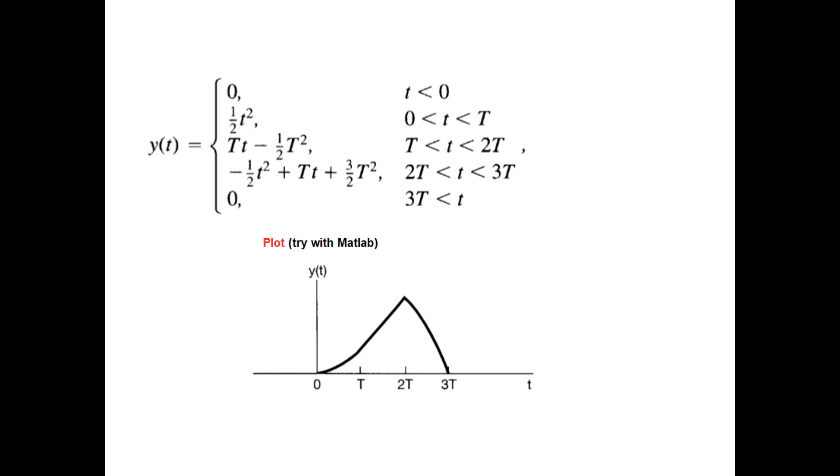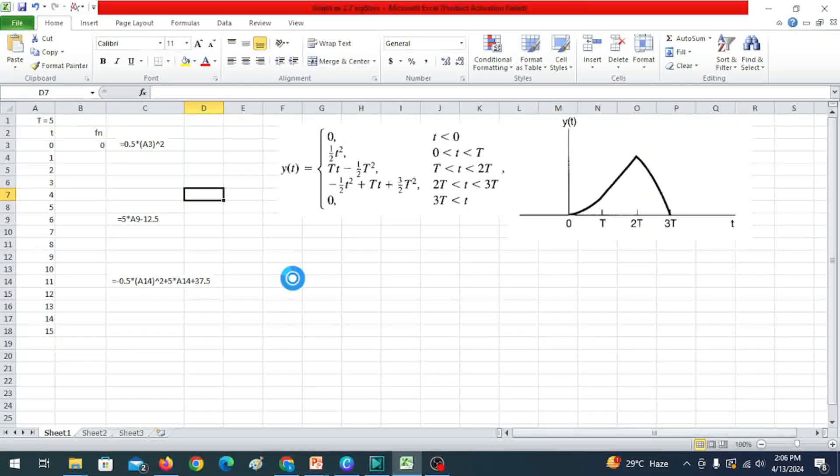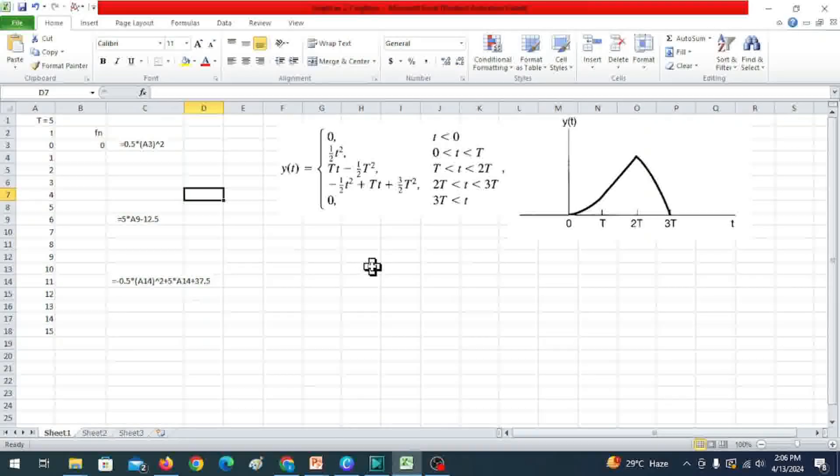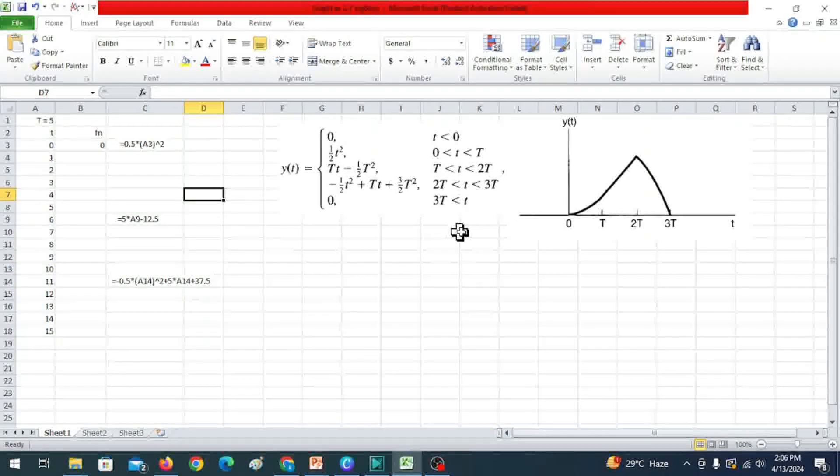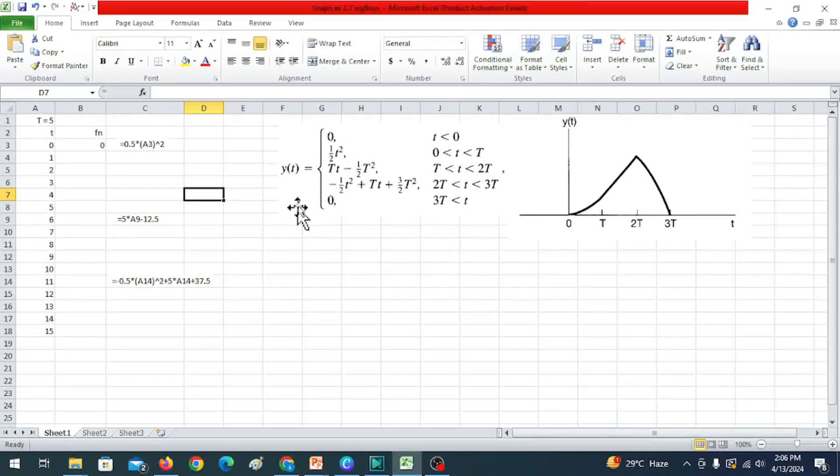So this is an extension of example 2.7 from signals and systems. And in my previous video, one of the students has doubt as to how do we get this graph plot from the output data that is given. I'll take help of Excel sheet. And a couple of things I have to assume. One is the T, this range T. So let me assume it to be equal to 5.